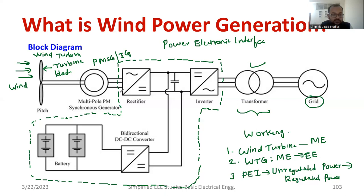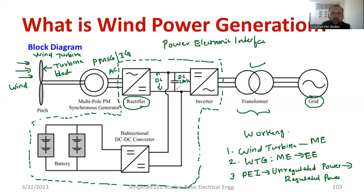Let me discuss the power electronic interface in detail. The output of the PMSG or induction generator is three-phase AC. We have to convert three-phase AC into DC by using a three-phase rectifier. The output will be DC supply. In order to hold the DC power constant, we require a DC link capacitor. The output of the DC link capacitor is connected to the inverter, which converts DC power to AC power — specifically three-phase AC using a three-phase inverter.